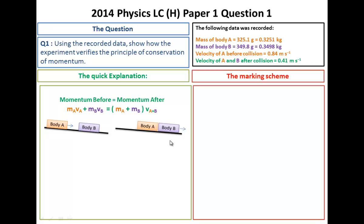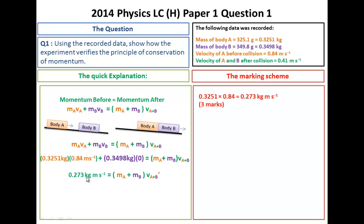So here's what you do. You write down your equation. We start with the left hand side here. We've substituted in the values, the mass of body A, the velocity of body A, plus the mass of body B, the velocity of body B. Now it's zero because it's stopped. We like that because things pop out of the equation and when you multiply them by zero they become zero. So when we multiply all that out you get 0.273 kilogram meters per second.